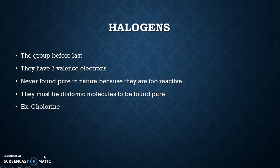Halogens are the group before last. They have seven valence electrons, so they are very reactive. They're never found pure in nature because they are so reactive, and they must be diatomic molecules to be found pure. Diatomic molecules means that there have to be two of them in existence. For instance, chlorine wouldn't just be Cl — for it to be stable in nature it would be two atoms of chlorine, so it would be Cl₂.